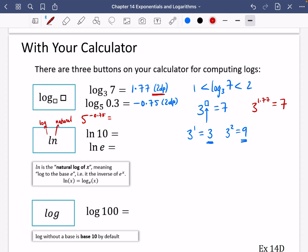What it actually means is it is the log to the base e, i.e. this is the inverse of e to the x. So ln x is the same as log base e of x. ln x is the same as doing log base e x. So there's Euler's number that's come back in again.